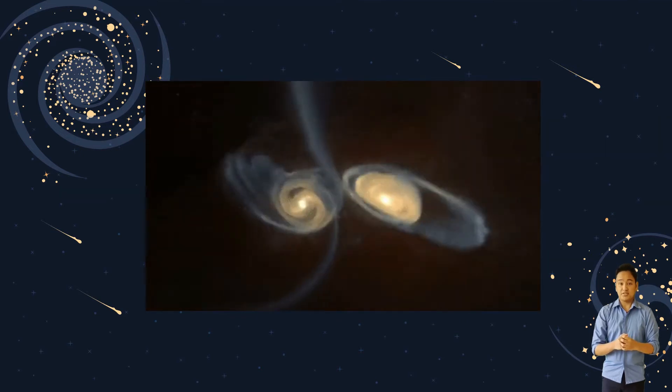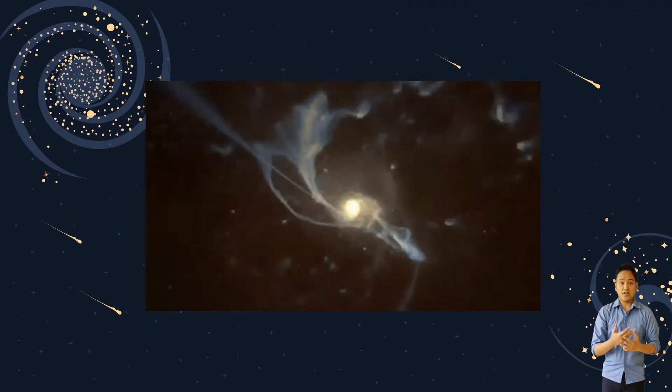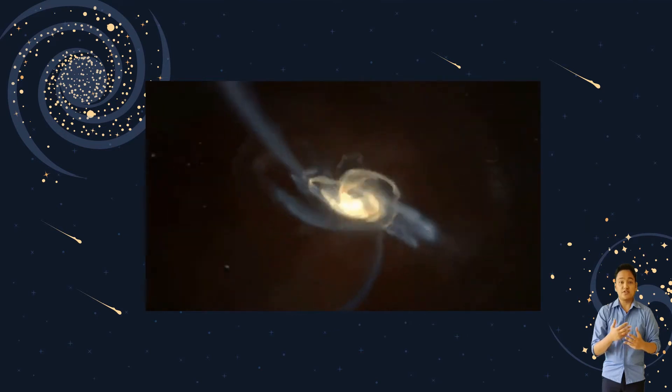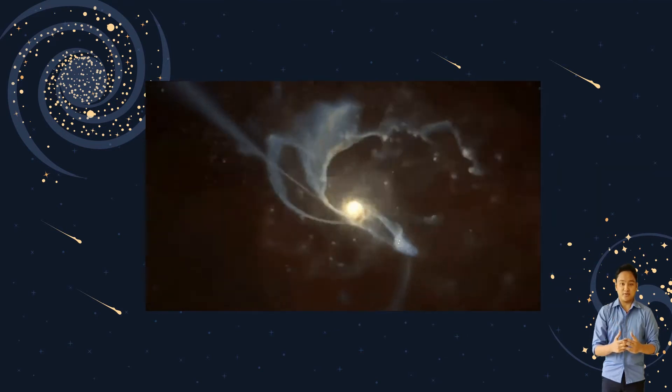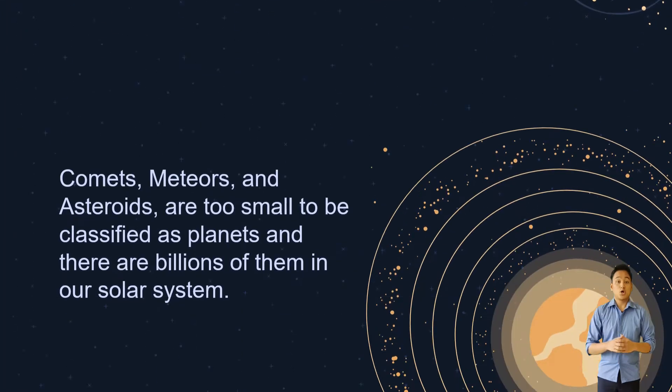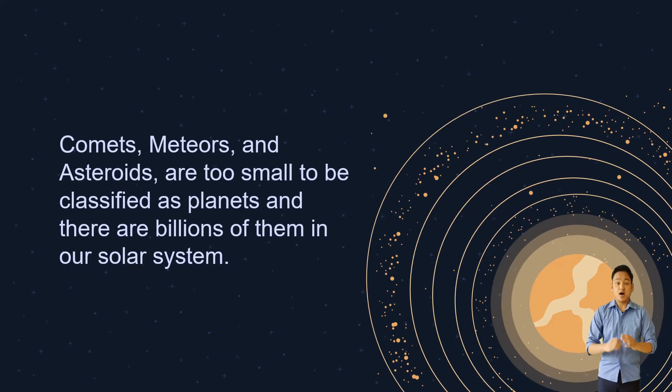Comets, meteors, and asteroids are the leftovers of the creation of the solar system almost 4.6 million years ago. Comets, meteors, and asteroids are too small to be classified as planets and there are billions of them in our solar system. All of them share some similarities, which is why it is important to know how to distinguish them from one another.